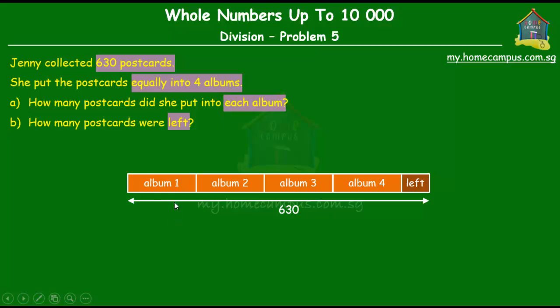We have to find out first how many postcards she put into each album and how many postcards, if at all, were left. So we have to divide 630 by 4.